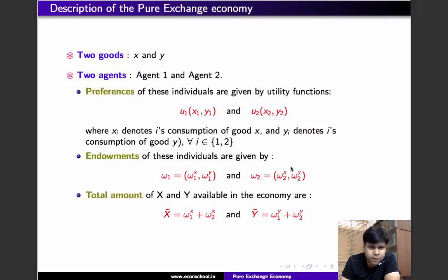For example, if one's endowment is omega 1 x, omega 1 y which is equal to, let's say, 4, so basically individual 1 has 4 units of x and 4 units of y. And individual 2's endowment is 6 units of x and 4 units of y. Then the total amount of x in this economy is 10 and the total amount of y in this economy is 8.